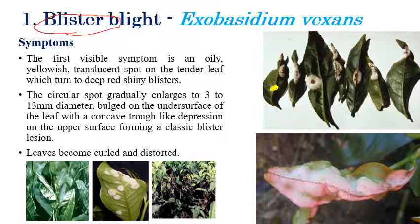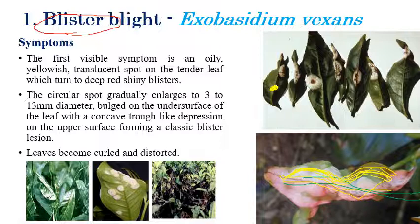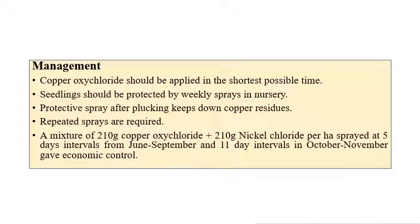The blister-like lesions can be clearly observed on the lower surface, along with curling of leaves. Once the oily translucent spots convert into blister-like appearance, the leaf slowly starts converting into concave-like depressions. In advanced stages, a bubble-like or bulged appearance can be clearly observed on the lower surface.